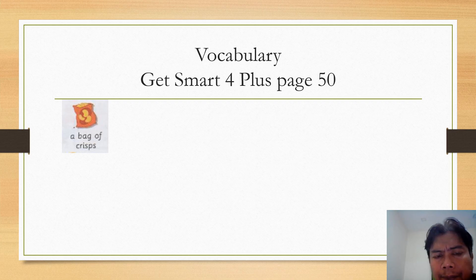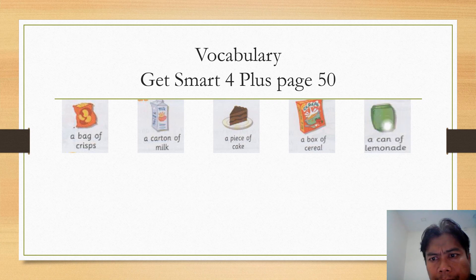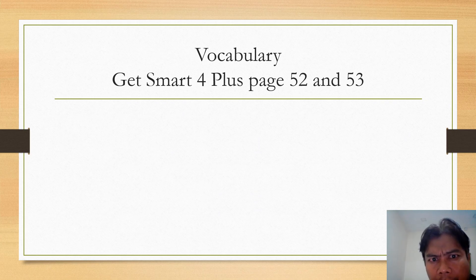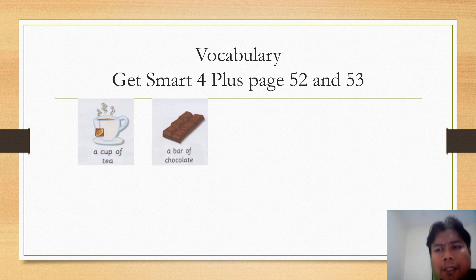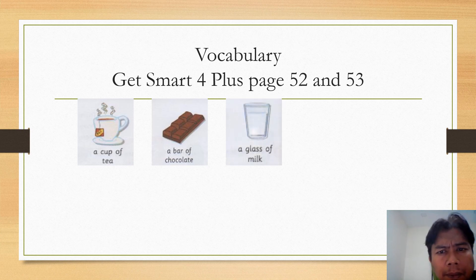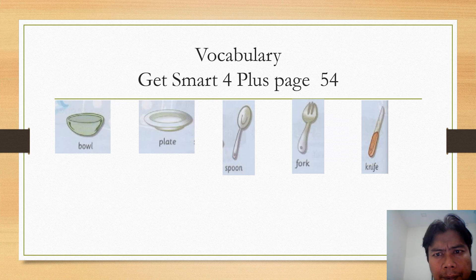Let's look at your Get Smart 4 Plus page 50. We are going to make revision: a bag of crisps, a carton of milk, a piece of cake, a box of cereal, a can of lemonade, and a bottle of water. Now let's go to pages 52 and 53: a cup of tea, a bar of chocolate, a glass of milk.